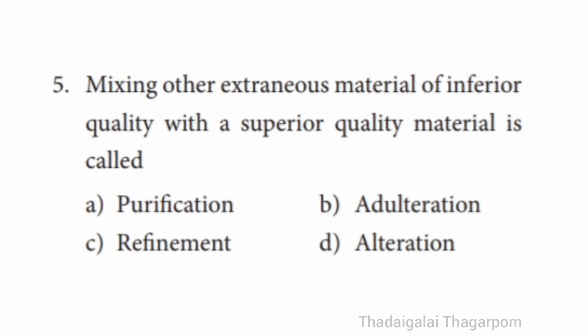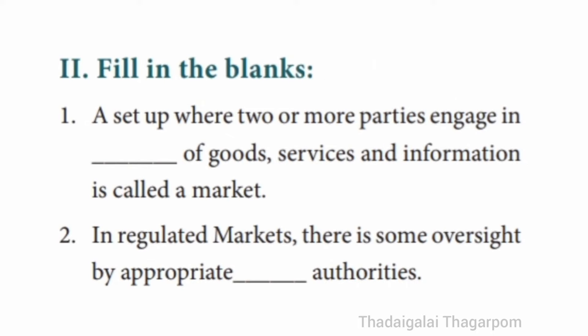Question 5: Mixing other extraneous material of inferior quality with a superior quality material is called ___. A. Purification, B. Adulteration, C. Refinement, D. Alteration. The answer is B — Adulteration.